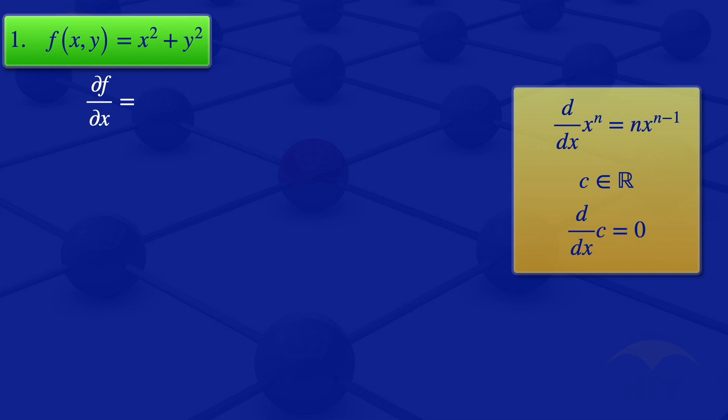Since y is held constant, we differentiate x² with respect to x and get 2x. The y² term is constant, so its derivative is zero. Therefore the partial derivative of f with respect to x is equal to 2x.